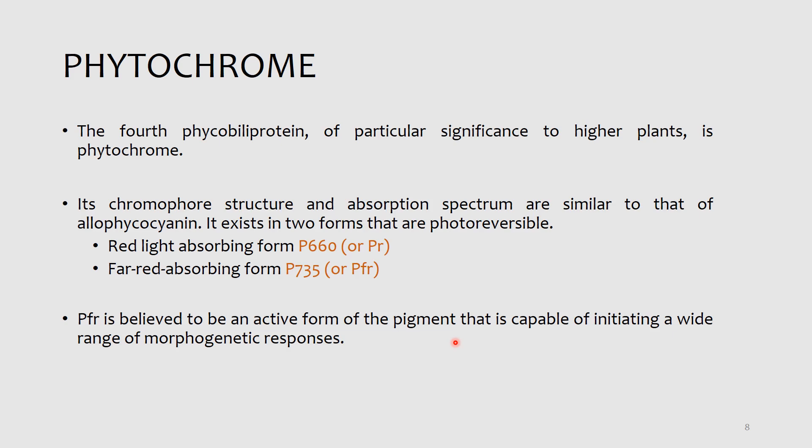The form which absorbs 660 nanometer light is called P660, or PR, or phytochrome red, and it absorbs maximally at 660 nanometers. Absorption of the 660 nanometer red light converts this pigment to a second far-red absorbing form, which is known as P735, or PFR. Absorption of far-red light by PFR converts it back to the red absorbing PR form. If you give the pigment red light, PR converts to PFR; if you give it far-red light, PFR converts back to PR.